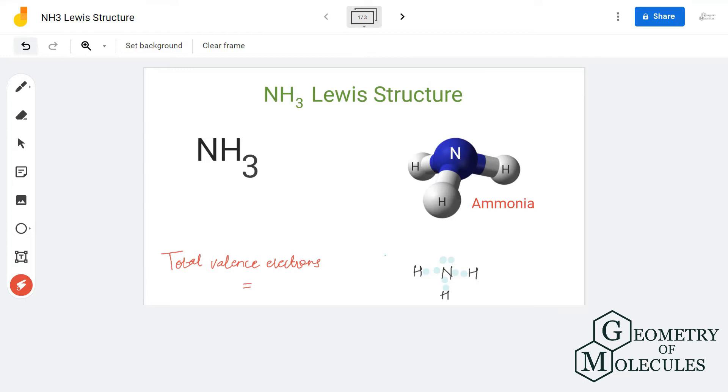Hi guys, today we are going to look at the Lewis dot structure of NH3 or nitrogen trihydride, which is also more commonly known as ammonia. In this video we shall discuss the total number of valence electrons in ammonia as well as its Lewis dot structure.